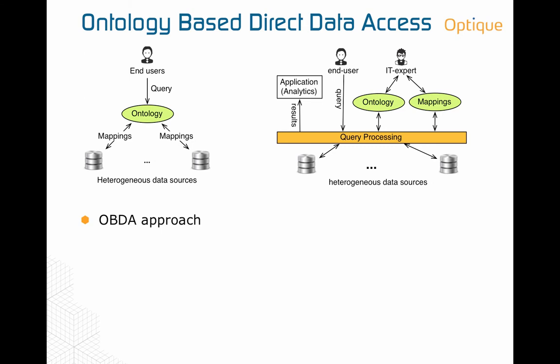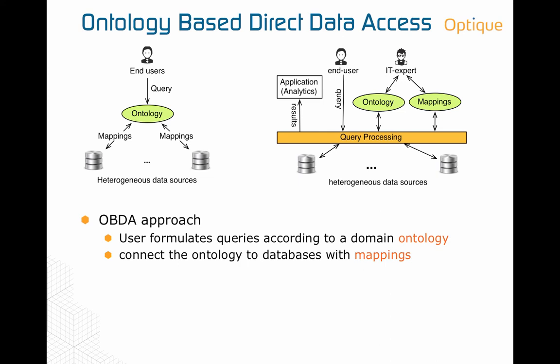One of the main theses of the Optique project is that ontology-based data access can be a way to give end users direct access to their data. The idea of OBDA is that users formulate queries according to a domain ontology that formalizes their own vocabulary. A set of mappings then connects the terms in the ontology to what is found in the databases. Technically, this is solved by a query processing component that takes the query, as well as the ontology and mappings, and rewrites queries into a sequence of queries that are sent to the databases.